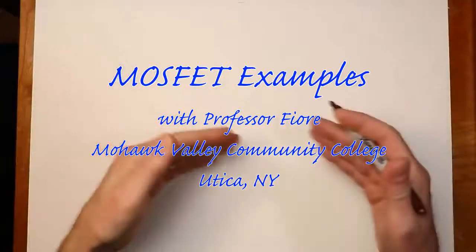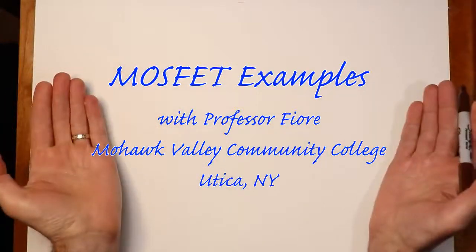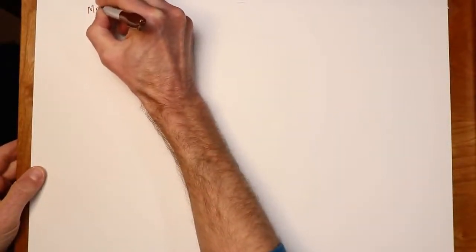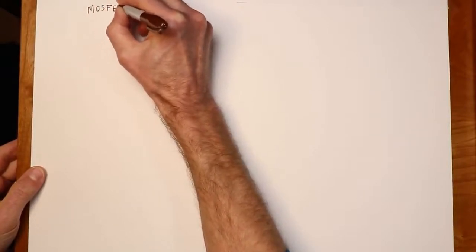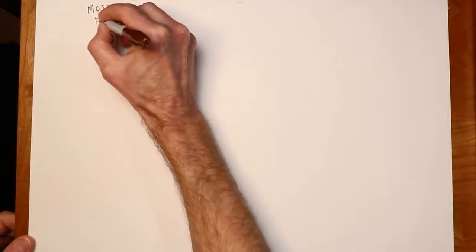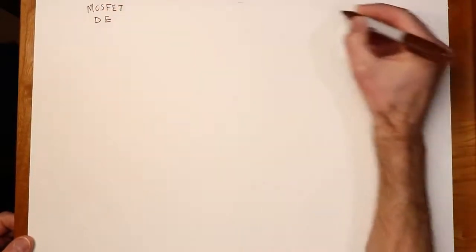And it's time for some MOSFET amplifiers. Last time we looked at MOSFET construction and some biasing. We noticed there were two types: depletion enhancement, and then enhancement only.